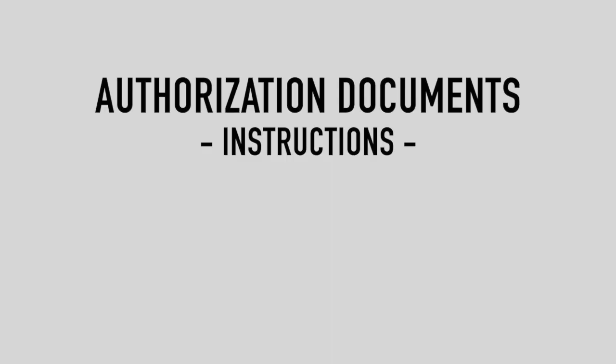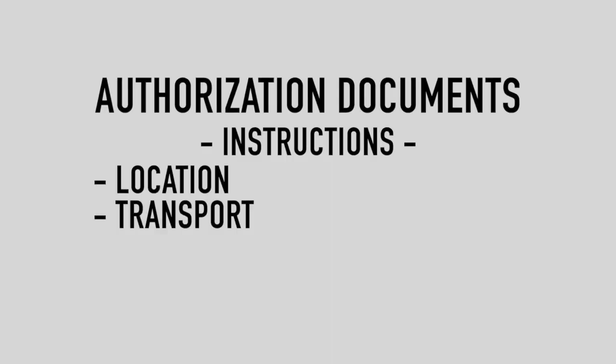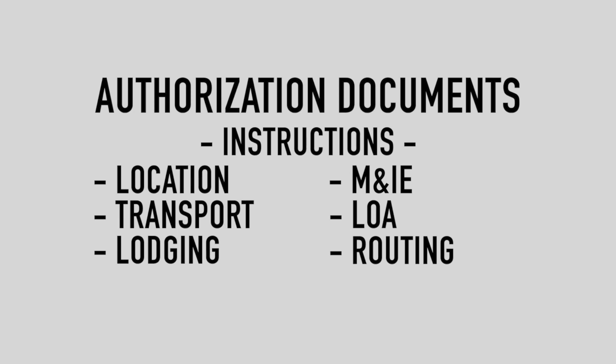If you do not get a welcome email, you can go on ATARS and search the specific course you are attending at that specific location and schoolhouse. In there, they will have coordinated instructions. The key things you need to find out when setting up your authorization in DTS are: where are you going, how are you getting there, where are you staying, where are you eating, who's paying for it, and who are you routing this authorization through?